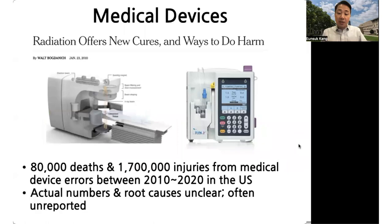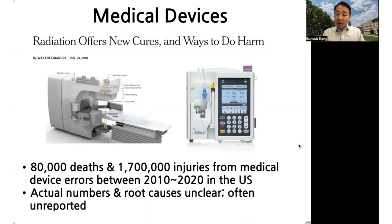One type of system where a failure can result in serious consequences is in the domain of medical devices, such as infusion pumps, radiation therapy machines, and electronic health records. According to government statistics, between 2010 and 2020 in the U.S., there were around 80,000 deaths and more than 1.7 million injuries resulting from medical device errors. The actual numbers may be higher because some incidents are not reported by hospitals.